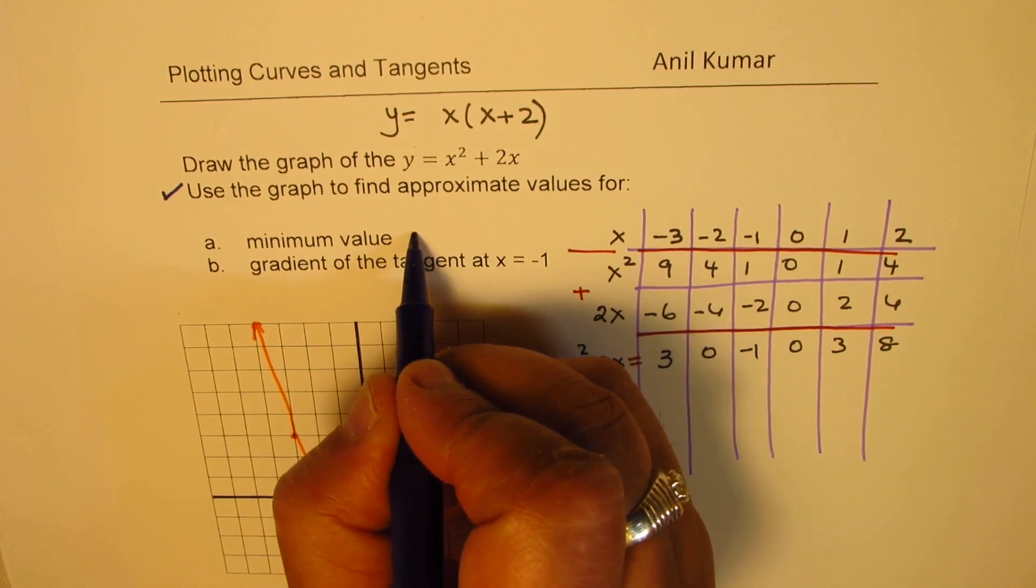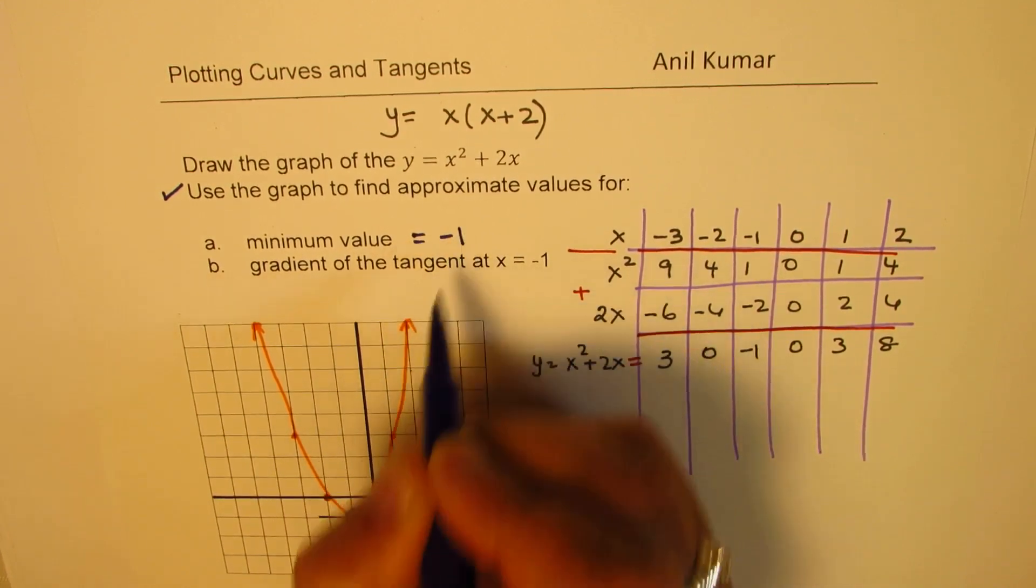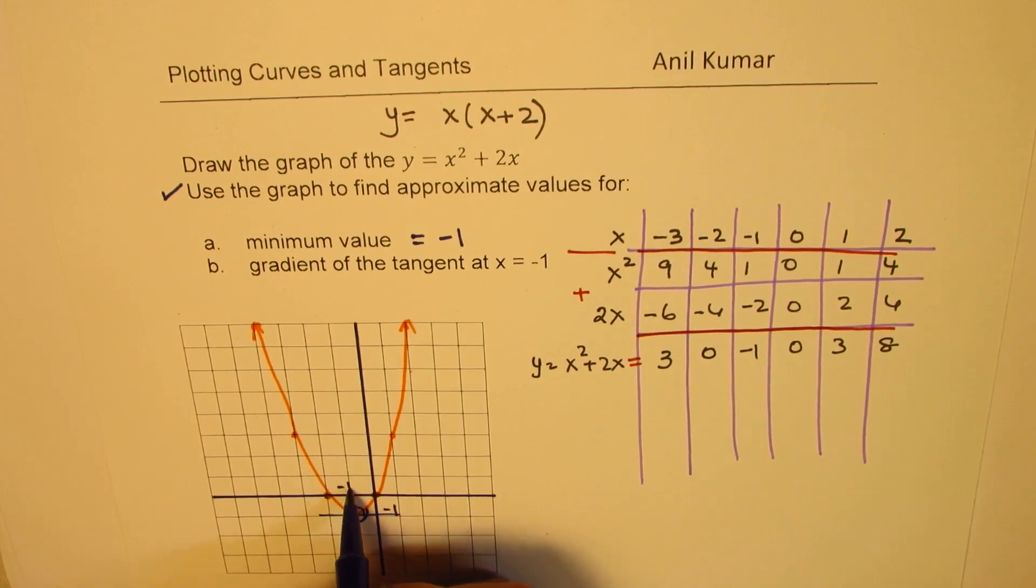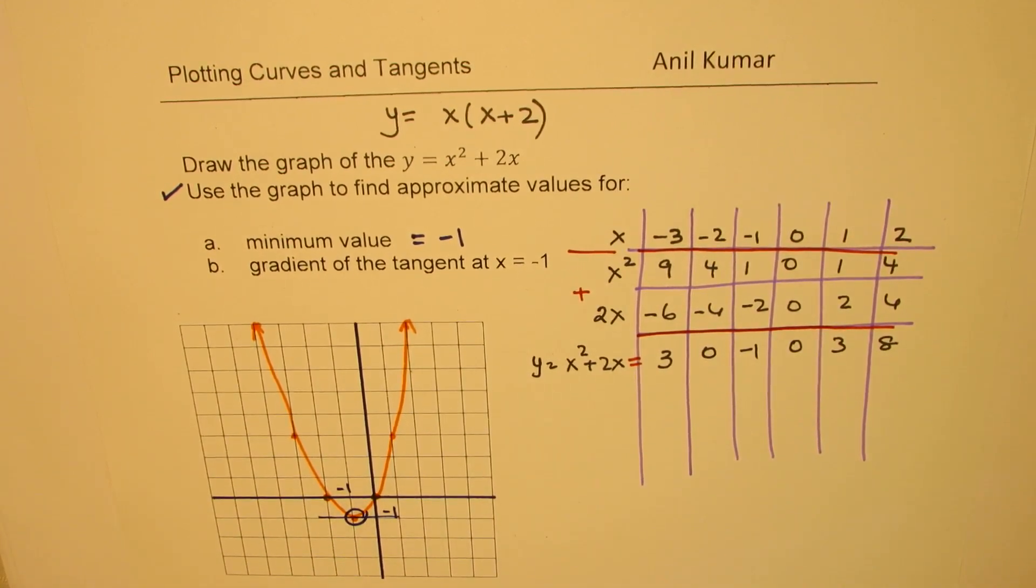So the minimum value here is -1. So the minimum value is equal to -1. So it happens also at -1 and it is -1. So that is the minimum value.